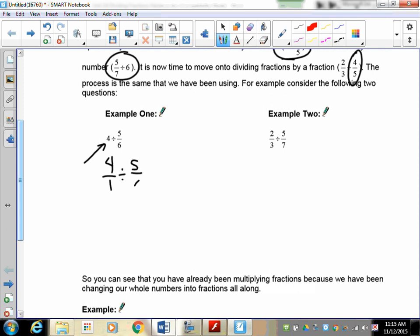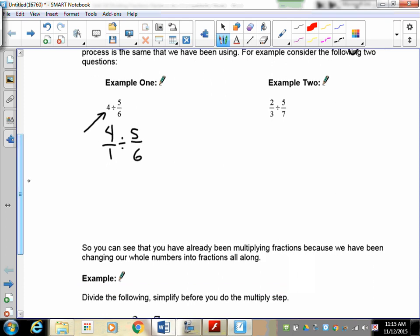Now to divide this, the five over six became its reciprocal so this becomes six over five. The four over one doesn't change and now we can multiply. So we have four times six over one times five which gave us 24 over five.